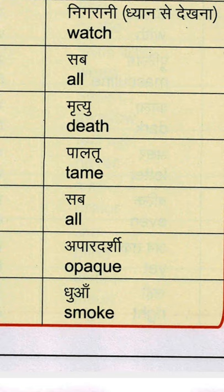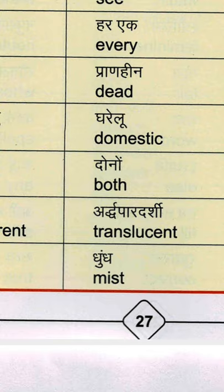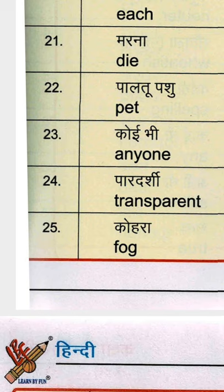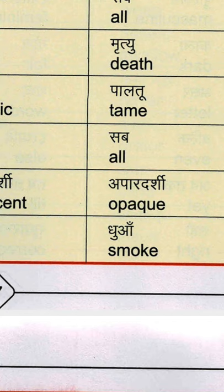मरना — die — D-I-E, die means मरना. प्राण हीन, जिसमें प्राण नहीं हो — dead — D-E-A-D. मृत्यु — death — D-E-A-T-H. पालतू पशु — pet animal. घरेलू — domestic — D-O-M-E-S-T-I-C. पालतू — tame — T-A-M-E.